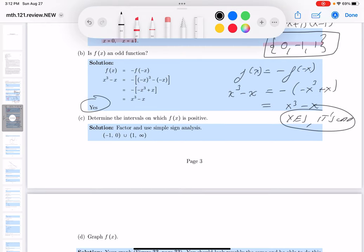Determine the intervals when f of x is positive. Fairly simple to do. We're going to do it by sign analysis. How do we do that? We list the zeros. Where are the zeros going to be? At zero, at one, and at minus one.